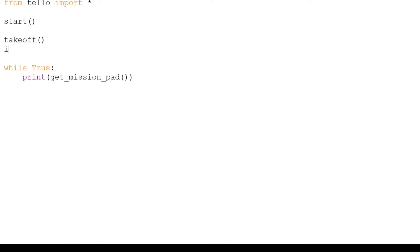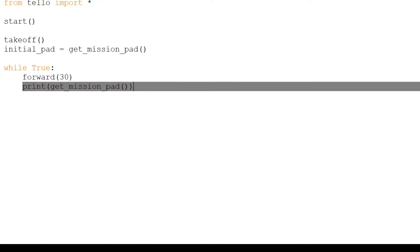Now we will store the first pad the drone sees in a variable called initial_pad. Then, in our continuous loop, we will move forward 30 centimeters each time. If the initial pad does not match the latest pad the drone sees, we will